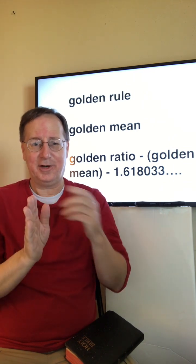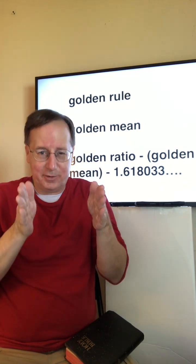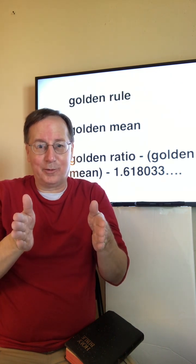So on one side, deficiency. On the other side, excess. But right in the middle is the Golden Mean, which may be a specific number or maybe a range.